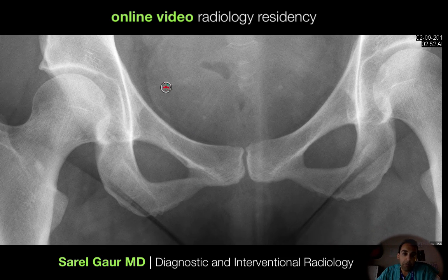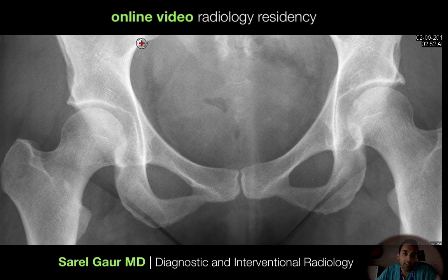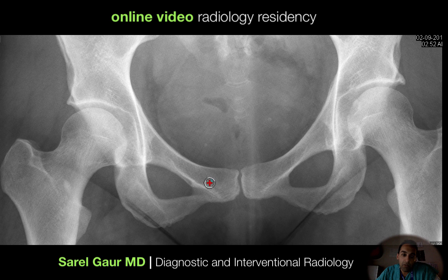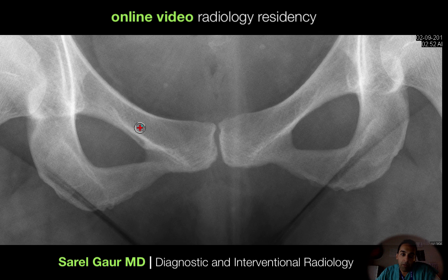There are some lines people use to help look for fractures. This is the iliopectineal line — a nice smooth curve — so if there's a disruption of this smooth curve, that can indicate a fracture of the superior pubic ramus. I also have the ilioischial line, which can be interrupted in the setting of an ischial fracture or maybe an inferior pubic ramus fracture.